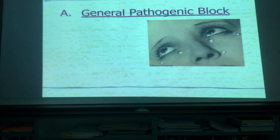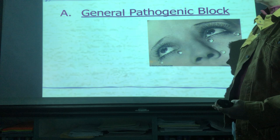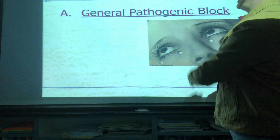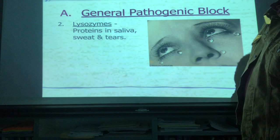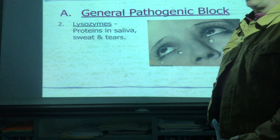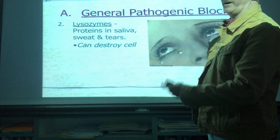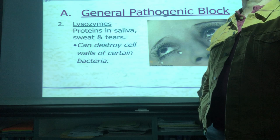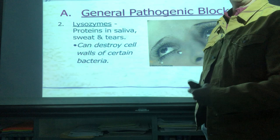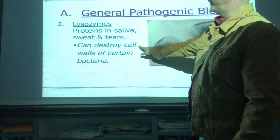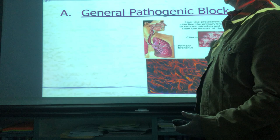The second mechanism involves tears. Tears have a protein called lysozymes. Lysozymes are protein molecules found in saliva, sweat, and tears, and they can destroy the outer cell wall — the cell walls of certain types of bacteria. It's a second mechanism in the first line of defense that works to stop pathogens and is pretty effective on some types of bacteria.